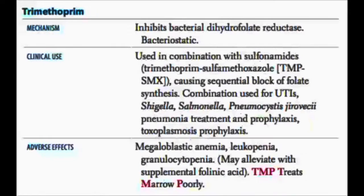Trimethoprim is an analog of methotrexate. It inhibits dihydrofolate reductase and is synergistic with sulfa drugs, so we give them together. It causes bone marrow suppression, just like methotrexate. To help counteract that, we give folate as well.